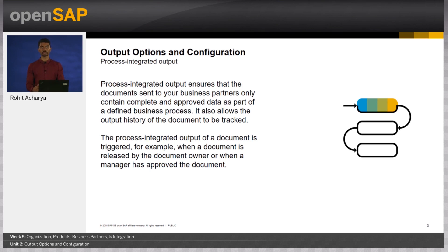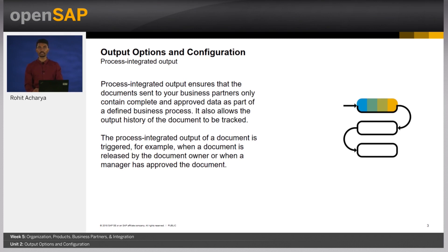When the output of a document is triggered, the system uses the output settings of the document to determine which output channel and which form template needs to be used. Depending on the defined output channel, the document is either sent to the print queue, emailed as a PDF attachment, or sent by fax. The appearance and content of the document is defined by the form template. For each business document type, a default output channel and form template can be configured by the administrator.